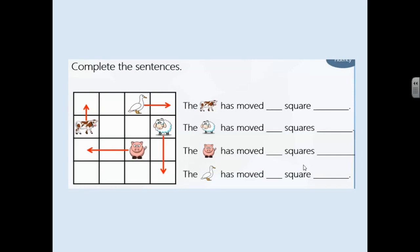Alright, let's have a look. The cow has moved one square backwards. If you put, because the picture, the way it's showing is not very clear, if you have put it to the left, that's fine as well.